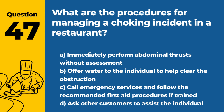Question 47: What are the procedures for managing a choking incident in a restaurant? a. Immediately perform abdominal thrusts without assessment. b. Offer water to the individual to help clear the obstruction. c. Call emergency services and follow the recommended first aid procedures if trained. d. Ask other customers to assist the individual. Answer: c. In the event of a choking incident, the first step is to call emergency services. If trained, follow the recommended first aid procedures, such as the Heimlich maneuver, until help arrives.